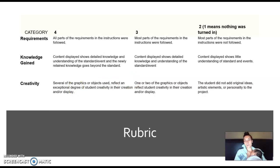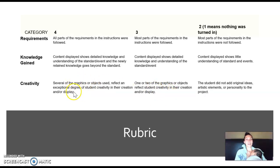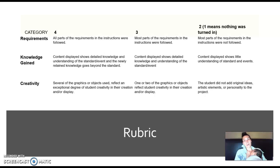Creativity is also part of the rubric — using graphics, objects, your personality — it depends on the type of project. For a four, it shows an exceptional degree, meaning you went beyond just a splash of color. A three has one or two graphics or objects showing creativity. A two means you didn't show original ideas, maybe copied something or someone — which ties into plagiarism. A one means there are no artistic elements, no personality — it's just words on a page.